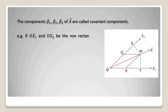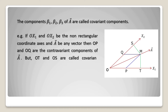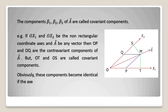For example, if Ox1 and Ox2 are non-rectangular coordinate axes and vector a is any vector, then OP and OQ are contravariant components of vector a, but OT and OS are called covariant components. Obviously these components become identical if the axes are at right angles.